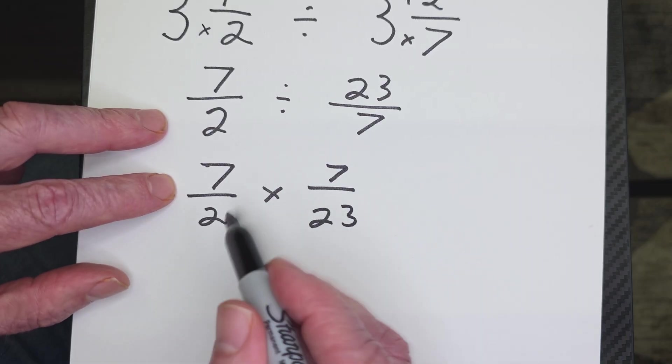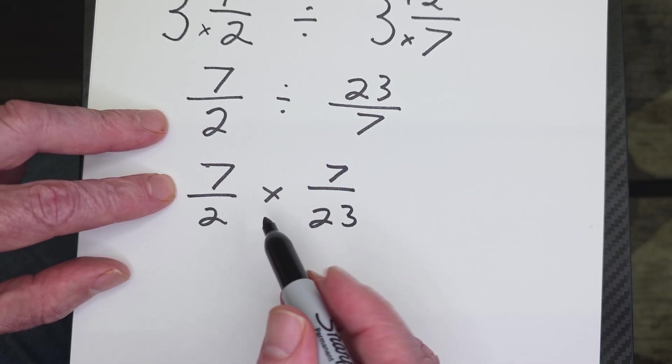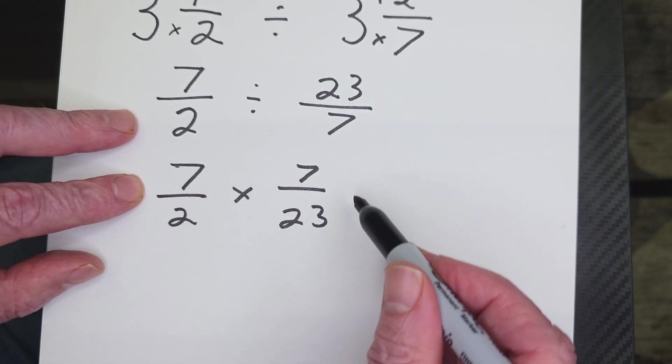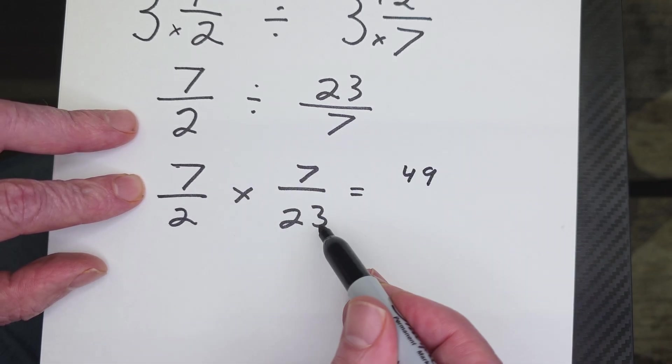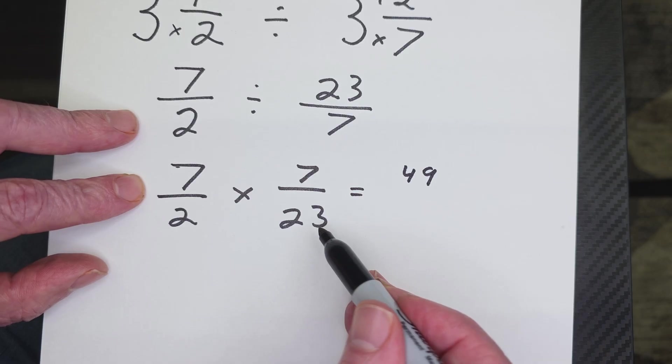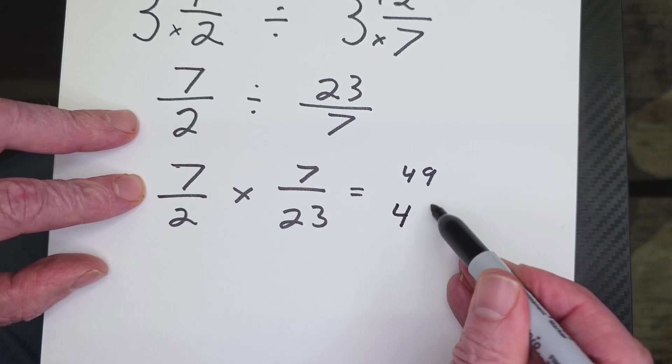All right. Now, can I simplify anything? No, you can't. So then we just go ahead and multiply it out. 7 times 7 equals 49, and then 2 times 23. What is that? That is 46.